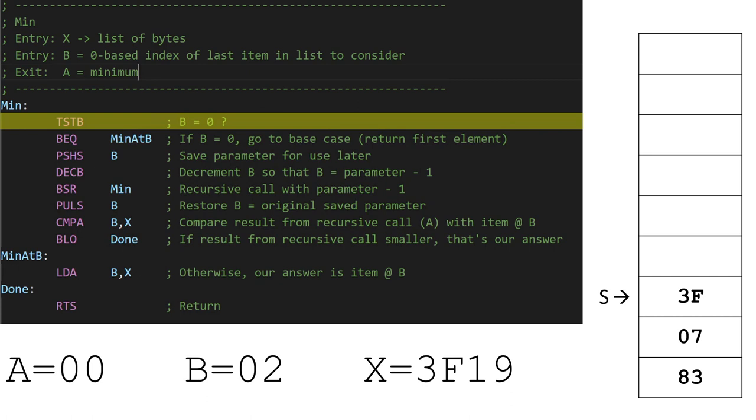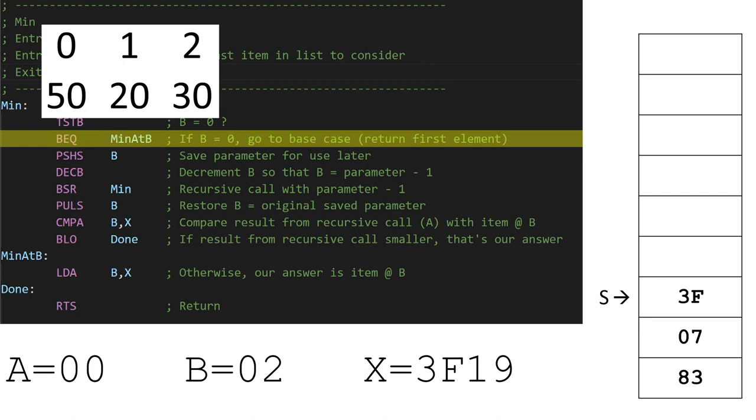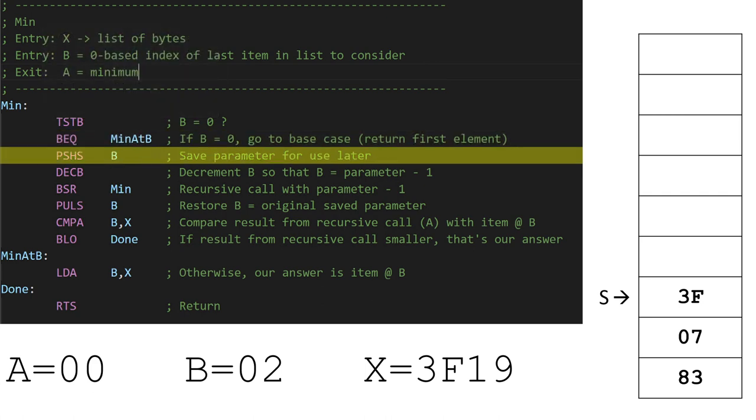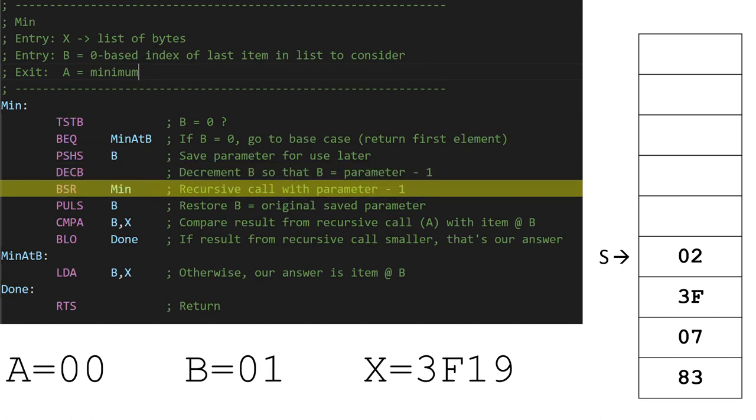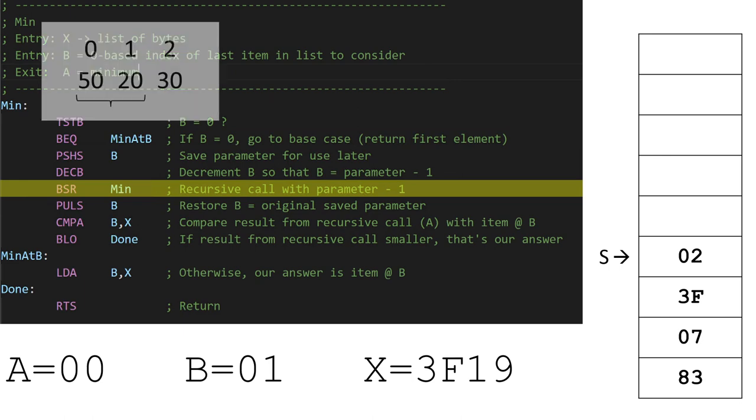First, we ask if B is 0. If so, that would mean there's only one item in the list, and that item would therefore have to be the minimum. No need to do any work in that case. But for now, we know we have three items, indexed 0, 1, and 2. So B is 2. So we prepare for our recursive call by saving our state onto the stack. This pushes the value of B, which right now is 2, onto the stack. We want our recursive call to look at everything except the last item in the list, so we change B from 2 to 1. This way the recursive call will only look at items in slots 0 and 1.